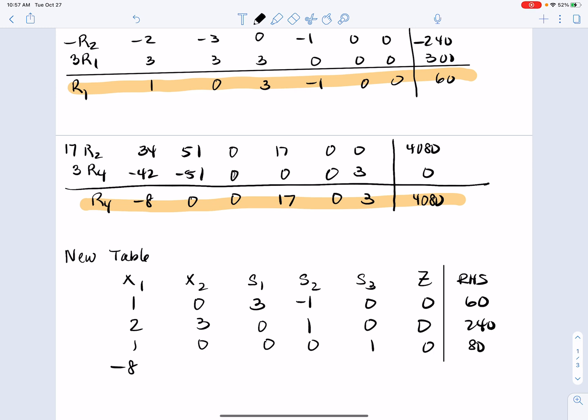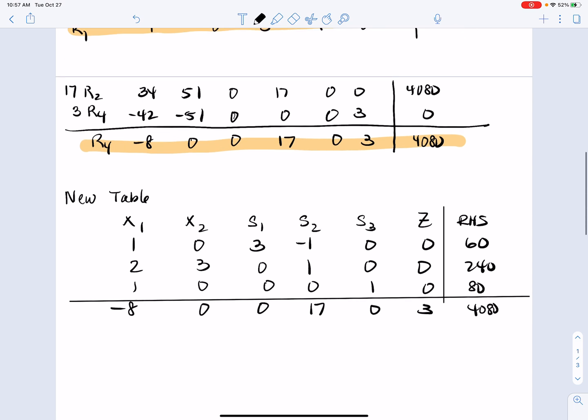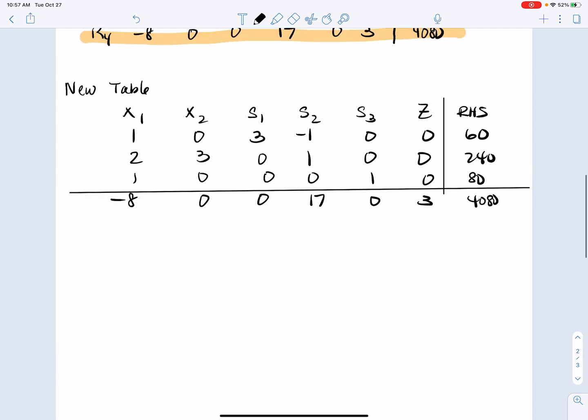And then the new r4 is negative 8, 0, 0, 17, 0, 3, 40, 80. So the question is, what solution can be read from this table? Now keep in mind how the makeup works here. So any column that has all 0s but 1 entry is now a basic variable. So that means we have x2, we have s1, we have s3, and we have z. Now, if it has a number other than 1, that's okay. That just means there's a coefficient here. But what this means automatically is that x1 is equal to 0 and s2 is equal to 0. So that means we essentially swapped out x2 for s2.